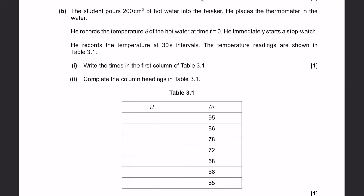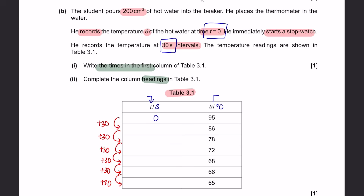Question B. The student pours 200 cm³ of hot water into the beaker, places the thermometer in the water, and records the temperature theta at time t equals 0. He starts a stopwatch and records the temperature at 30-second intervals. The temperature readings are shown in table 3.1. Write the times in the first column and complete the column headings. The time column is in seconds and the theta column is in degrees Celsius. The experiment starts at t equals 0, then increases by 30 at each interval.